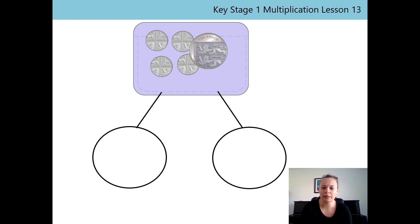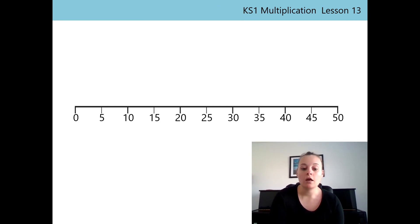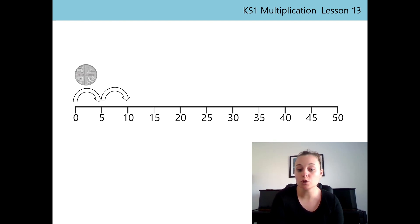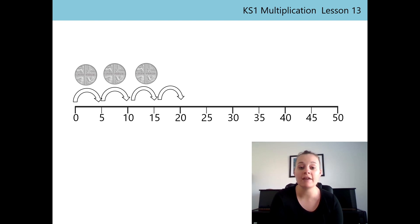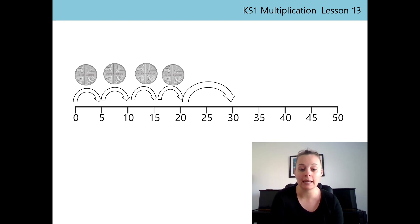Let's have a look at it using a number line. I'm going to start by counting in 5s. So we have one jump of 5, which represents one 5 penny; two jumps of 5, which represents two 5 pennies; three jumps of 5, which represents three 5 pennies. And when we skip count in 5s we say 5, 10, 15, 20. Now we have to add our 10P coin, so I'm going to jump 10 on my number line. The 10 represents the one 10P coin. And there's my total — 30P.